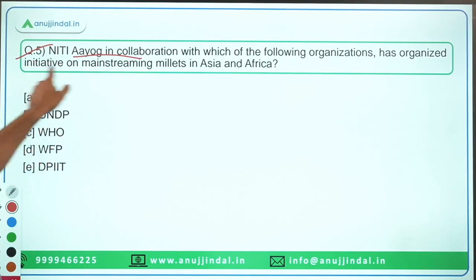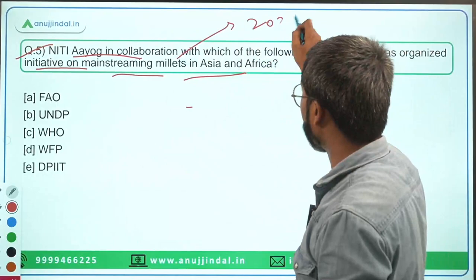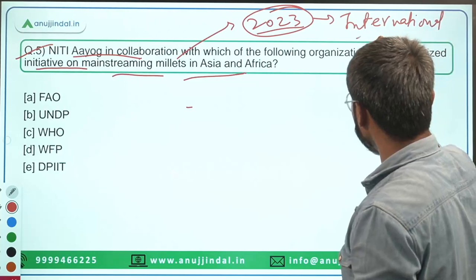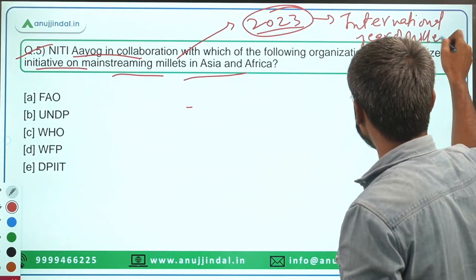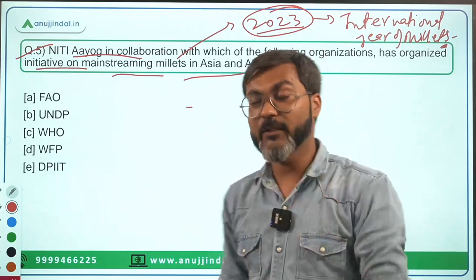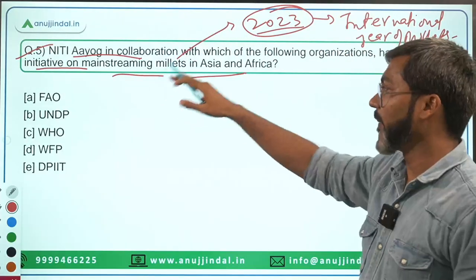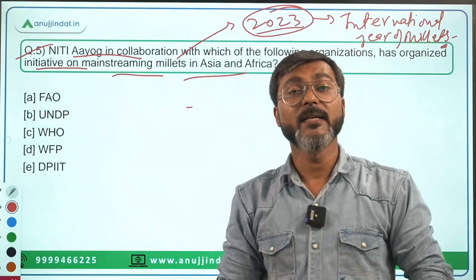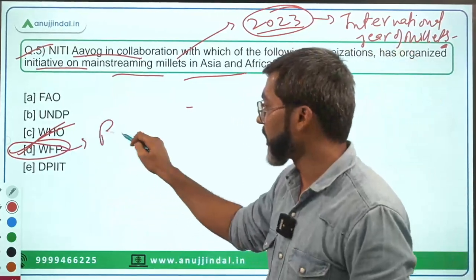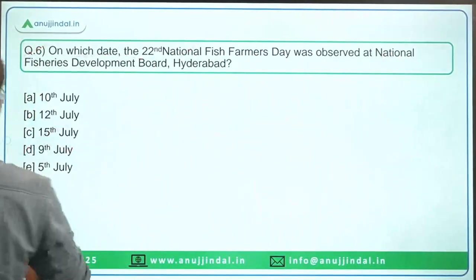Question number five: NITI Aayog in collaboration with which organization has organized the initiative on mainstreaming millets in Asia and Africa? As you know, 2023 will be observed as the International Year of Millets by the United Nations. This initiative was organized by NITI Aayog in collaboration with the World Food Programme. Option D is the correct answer. Remember, the World Food Programme is headquartered in Rome, which is the capital of Italy.